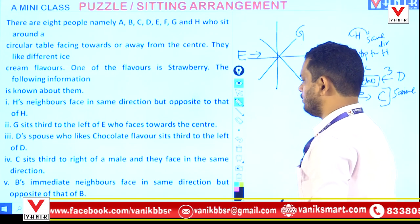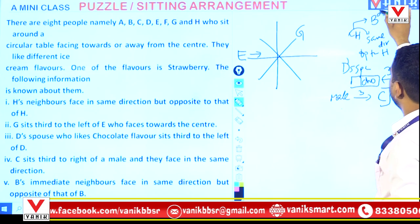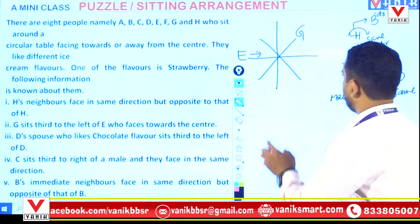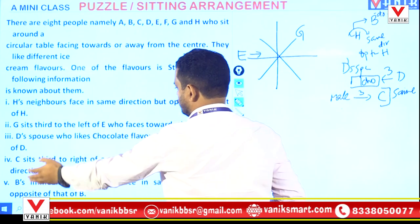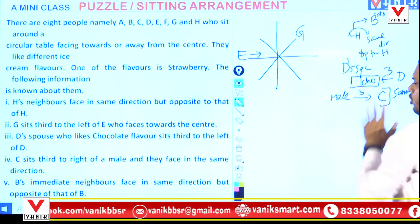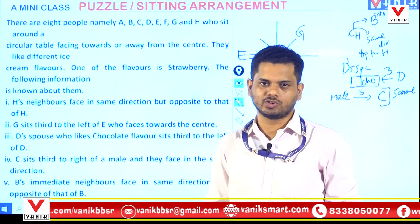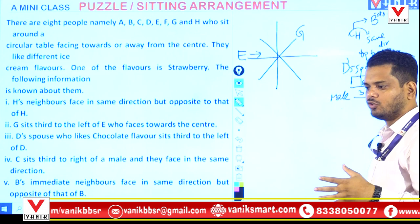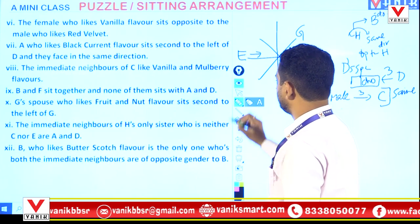Condition 5: B's immediate neighbors face the same direction but opposite to that of B — same kind of data as H. Up to condition 5, we've either added the information to the arrangement or noted it in raw work. Raw work is very important — systematically retrieving all data in raw form is crucial. Even one wrong retrieval under exam pressure, and going back to correct it becomes very difficult.